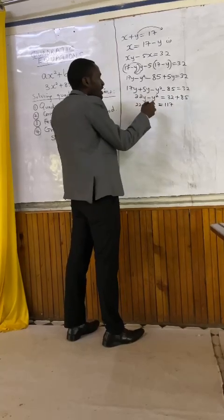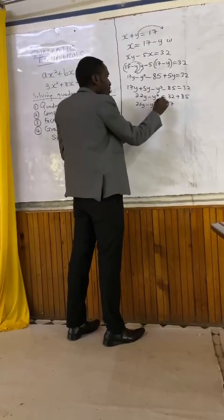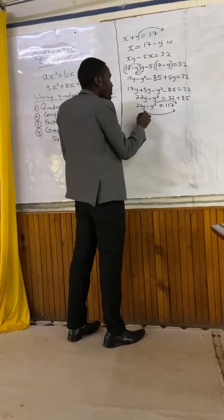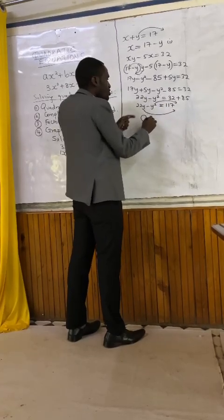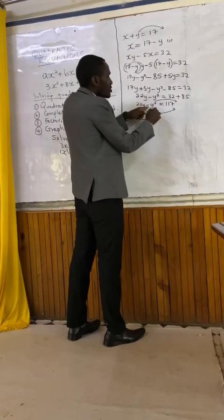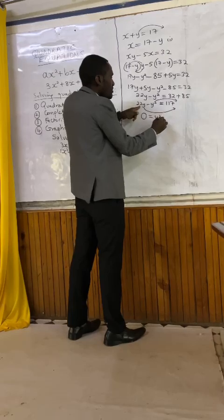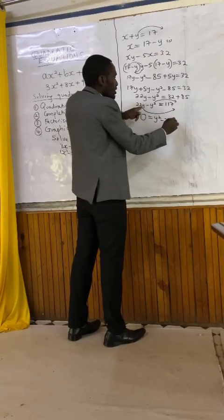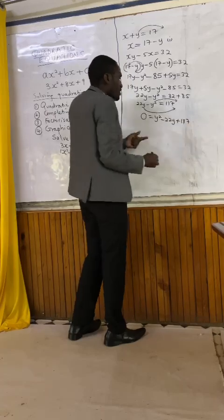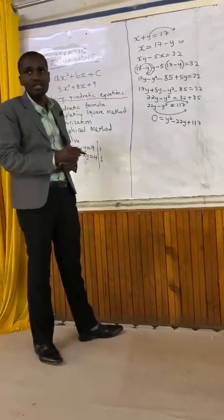So we can take everything to one side. We shall take y squared to this side and also 22y to this side. So what do we have? 0 is equal to y squared — it was negative, it becomes positive — then minus 22y, then plus 170. We have formed a quadratic equation.